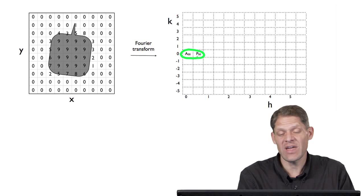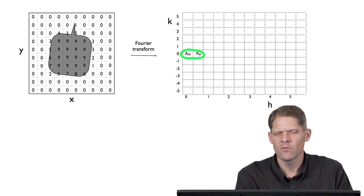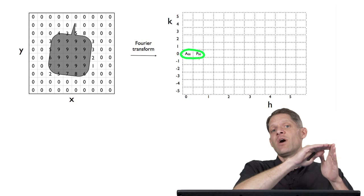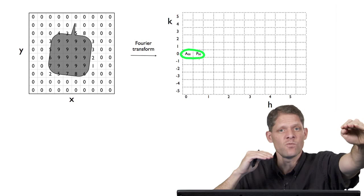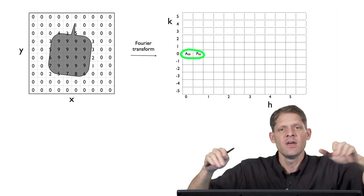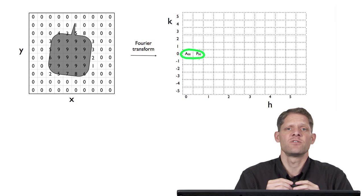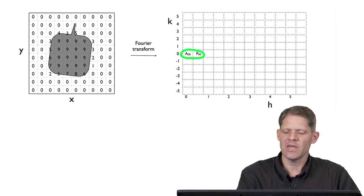What is the 0, 0 wave? This is a wave that has zero oscillations across the box in X and zero oscillations across the box in Y. In other words, it's flat — just a simple constant value, just like the first term in a one-dimensional Fourier transform represented the average value of the function. So here the 0, 0 wave represents the average value of all the pixels in this whole image.